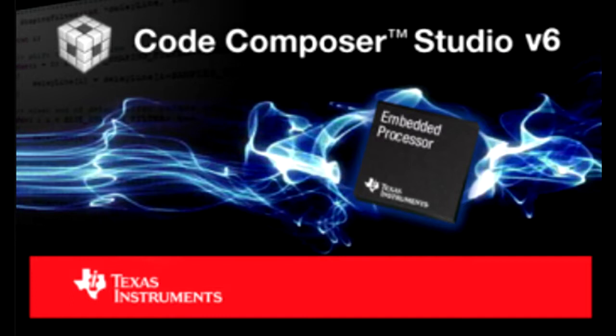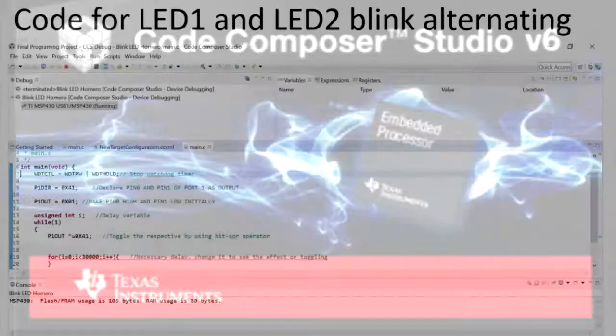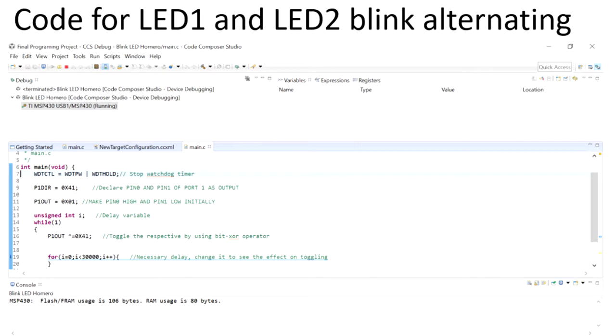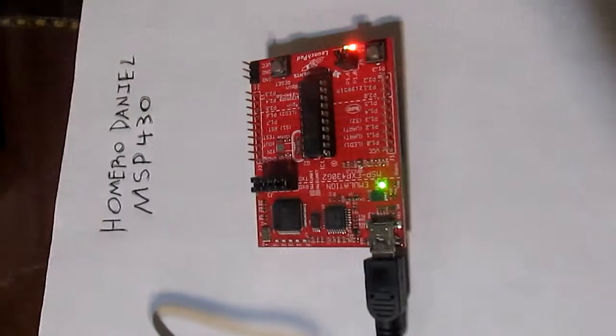The first code makes LED1 and LED2 blink alternating. This is the code. Now, this is the behavior.